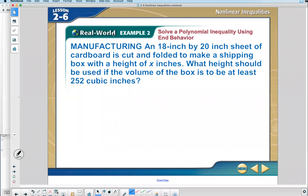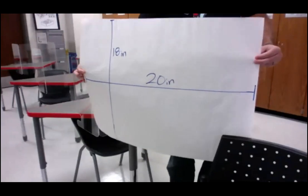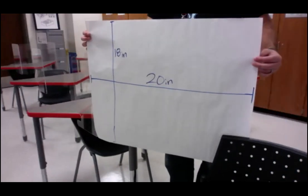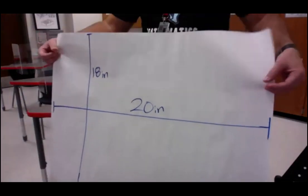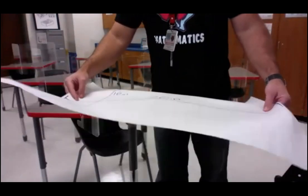Example two says manufacturing: an 18-inch by 20-inch sheet of cardboard is cut and folded to make a shipping box with a height of X inches. What height should be used if the volume of the box is to be at least 252 cubic inches? Imagine this is cardboard — 20 inches long, 18 inches tall. If we want volume, we'd have to fold up the corners, but you get a corner problem when you try to make the other wall.